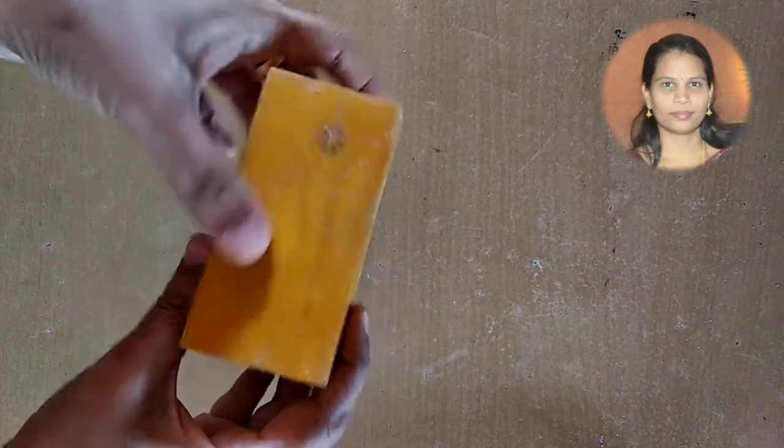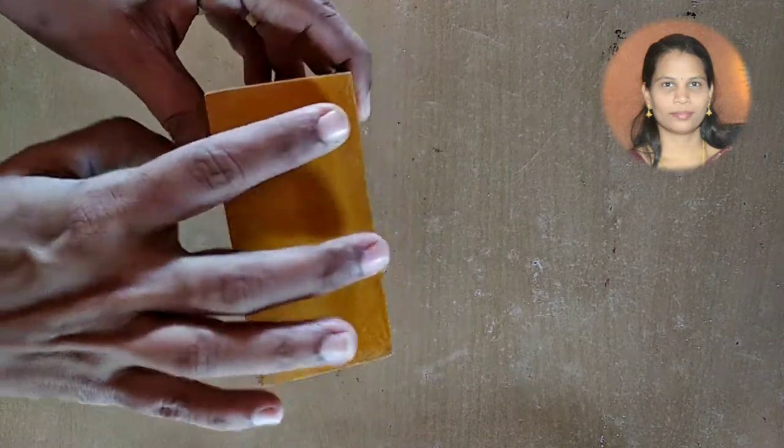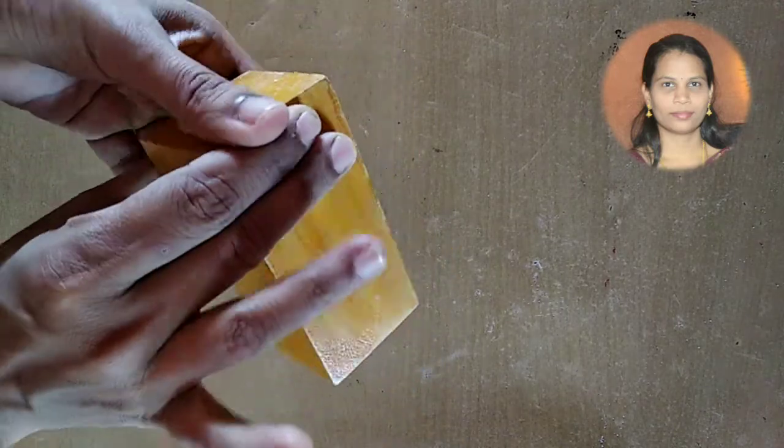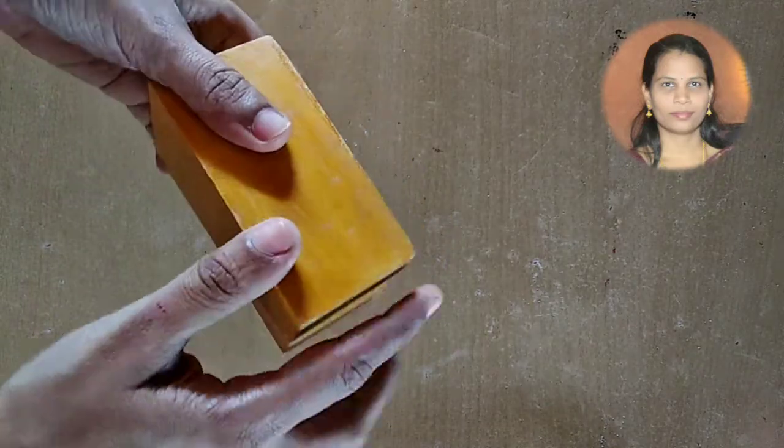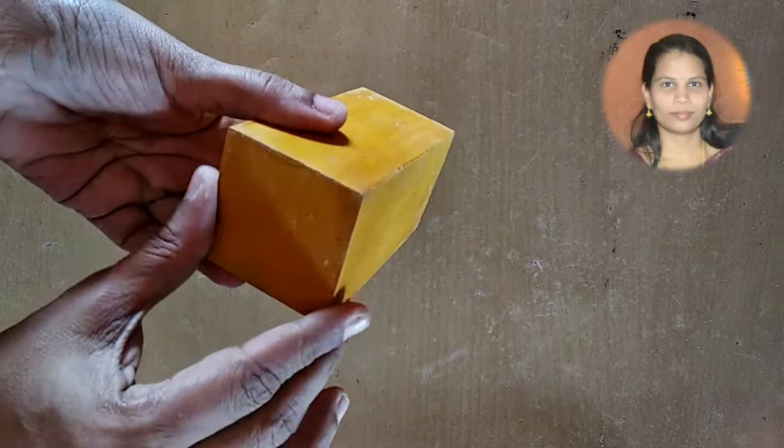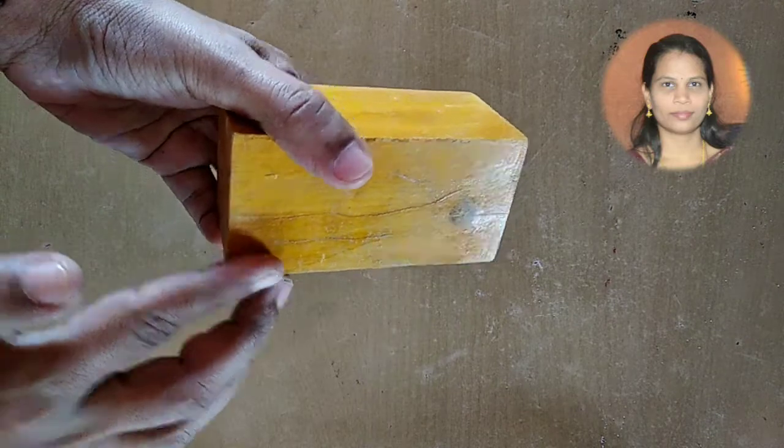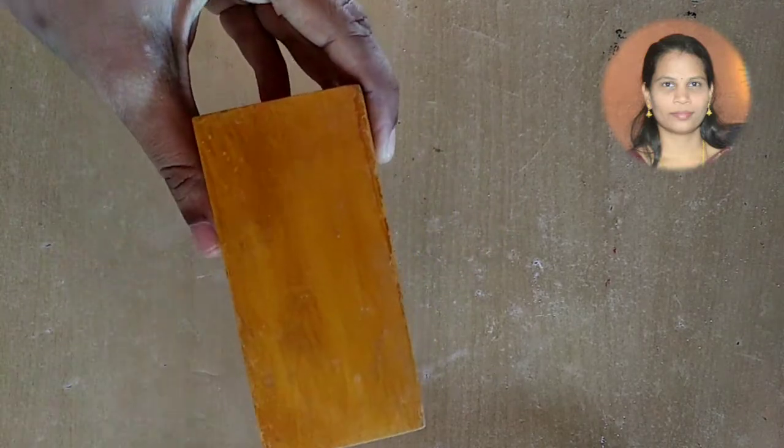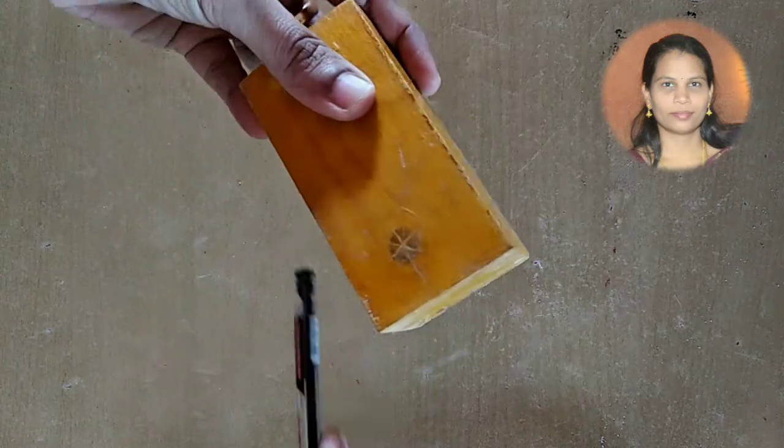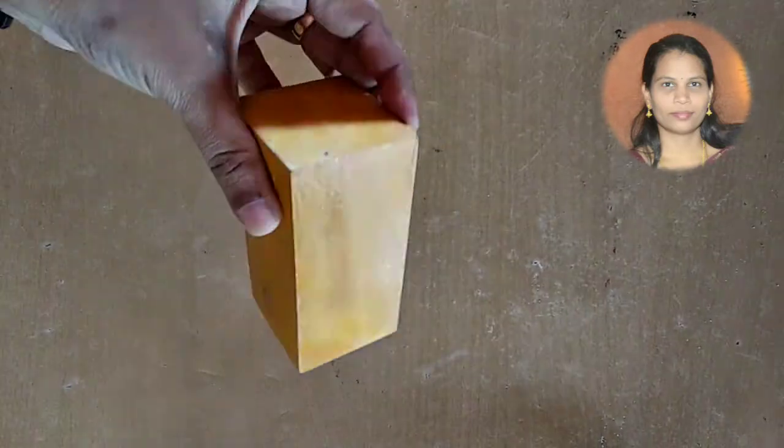Cuboid. This is a cuboid. This geometrical shape has 8 corners and 12 edges. It is surrounded with 6 faces. Opposite faces are equal in cuboid. One, two, three, four, five, six - 6 faces.